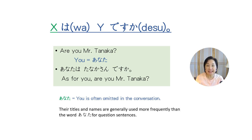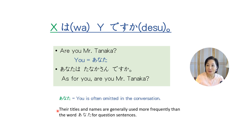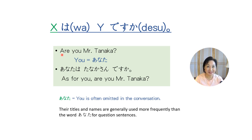I want to mention one more thing about pronouns — the usage of the word 'you' in Japanese. In Japanese, the word for 'you' is anata, and it's often omitted in conversation. You don't want to address somebody who is older or in a higher position as anata — you'd rather use their title or name. Please avoid anata because it can sound condescending. For example, to ask 'Are you Mr. Tanaka?' simply say: Tanaka-san desu ka? And if the person is indeed Tanaka-san, they would respond: Hai, Tanaka desu — or Hai, so desu.